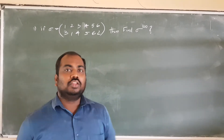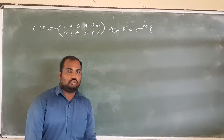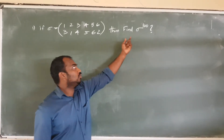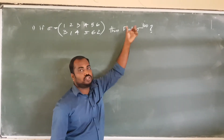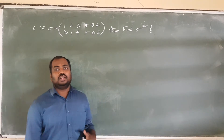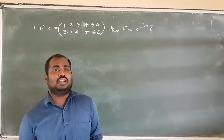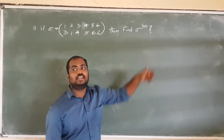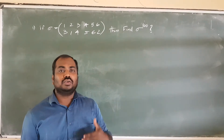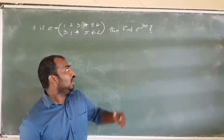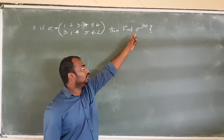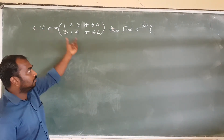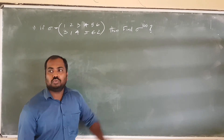We have a problem: we want to find sigma raised to 100. We want to find sigma, sigma squared, and sigma cubed. We want to know the value of the power — sigma, sigma squared, and sigma cubed.